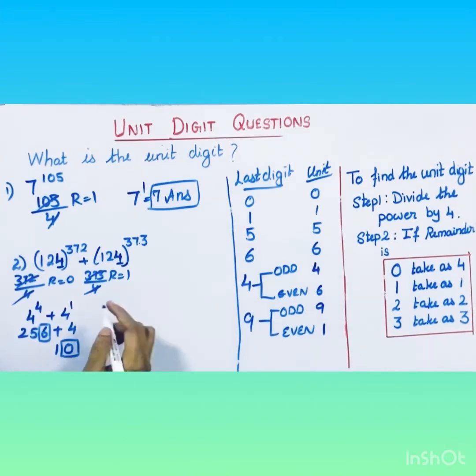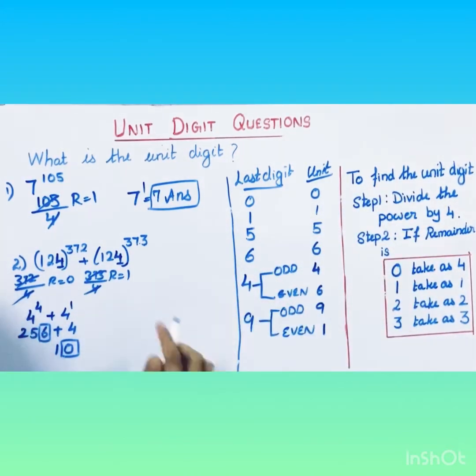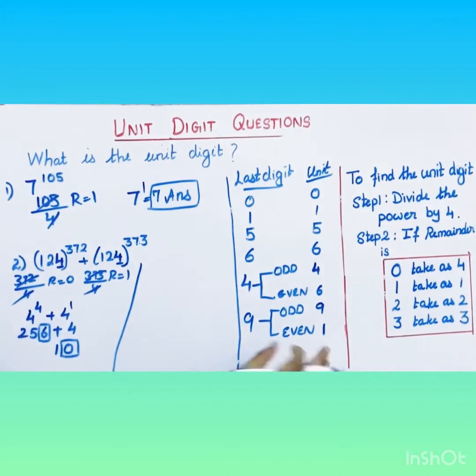Six plus four is ten, so the unit digit of this summation is zero.